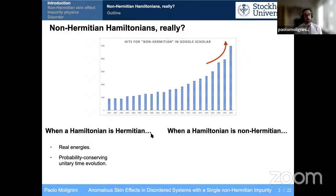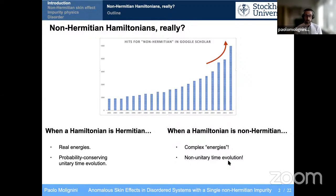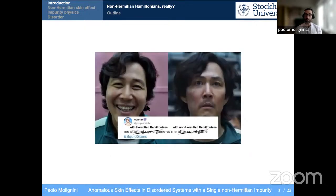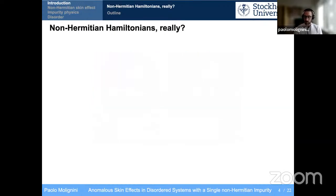Another very useful property is unitarity, which also comes from Hermiticity. If you take your time evolution operator as an exponential of the Hamiltonian, an exponential of a Hermitian operator is a unitary operator. Unitary operators preserve probabilities and normalizations — you can start with a normalized state, let the system time evolve, and be sure that at the end your system will still be normalized with no divergences. If we're dealing with a non-Hermitian Hamiltonian, these properties break down: we have complex energies and non-unitary time evolution where probabilities are not necessarily conserved. To say things in modern terms with a Squid Game meme — Hermitian Hamiltonians are good and easy; non-Hermitian Hamiltonians, maybe not so easy.